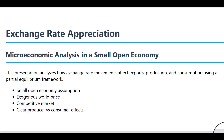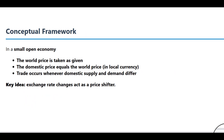Before we can analyze any kind of economic event, we have to agree on some ground rules. To keep our analysis clean and focused, we're going to make a key assumption about the kind of economy we're looking at. Our whole analysis starts with this idea of a small open economy. This doesn't necessarily mean the country is tiny on a map. In economics, it means its producers and consumers are price takers — they can buy or sell as much as they want on the world market.